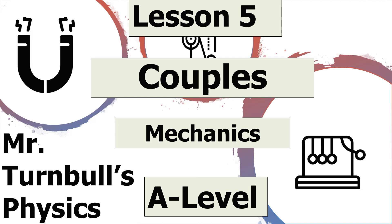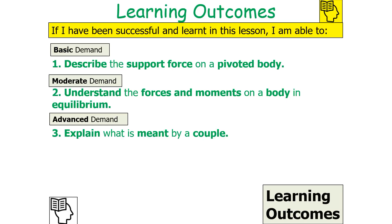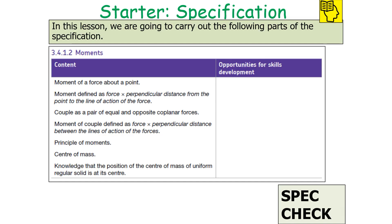Hello and welcome to today's lesson on couples, which is part of the mechanics topic in AQA A-level physics. In today's lesson we're going to calculate properties of couples based on the equilibrium laws. By the end we should be able to describe the support force on a pivoted body, understand the forces and moments on a body in equilibrium, and explain what is meant by a couple. This covers AQA A-level physics specification section 3.4.1.2 on moments.